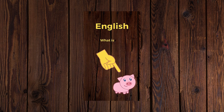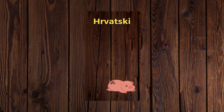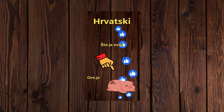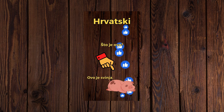What is this? This is a pig. Sto je ovo? Ovo je svinja.